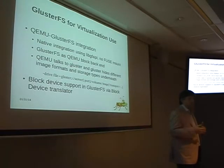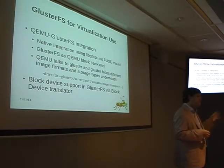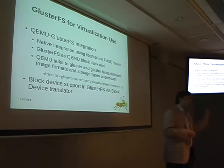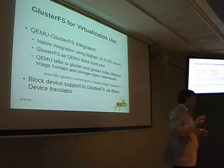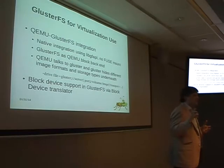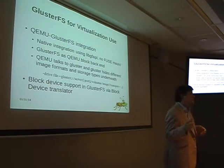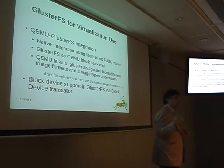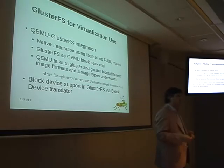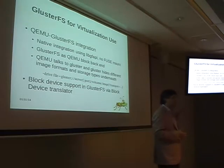There are essentially three parts of this integration: the QEMU protocol piece, which IBM implemented; the GF API piece that we implemented; and a block device translator on Gluster volumes, also implemented by the IBM engineers. That was our key new feature for 3.4.